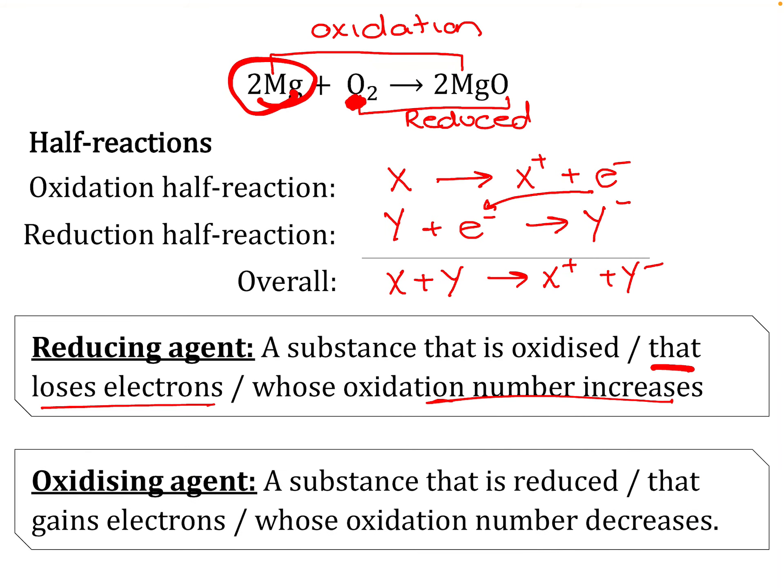The oxidizing agent causes oxidation. How does it cause oxidation? Because it takes an electron, so it causes something to lose its electron. It's the substance that's reduced, or it's the substance that gains electrons, or it's the substance whose oxidation number decreases. If something is oxidized, it is the reducing agent. If something is reduced, it is the oxidizing agent.